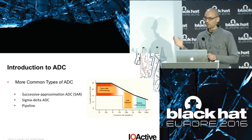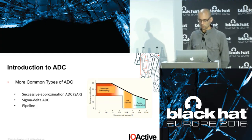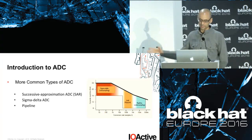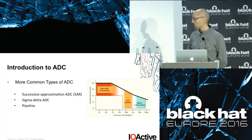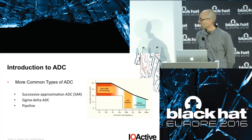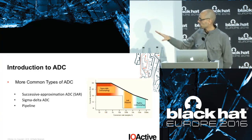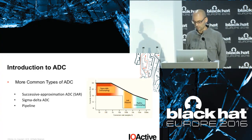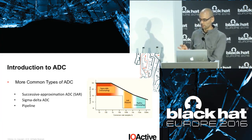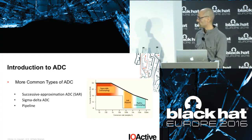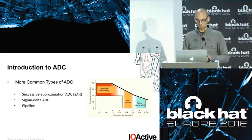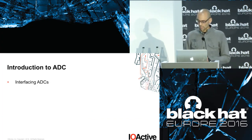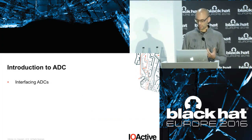There are different types of ADCs — these are the more common ones: the SAR, the Sigma Delta, and the pipeline. They are grouped by which conversion rates they usually work at. So, just a simple overview of how an ADC works.